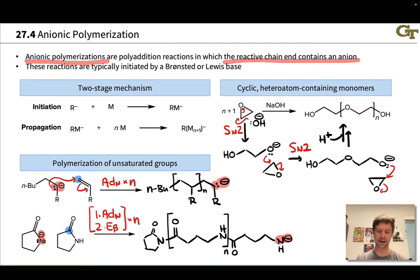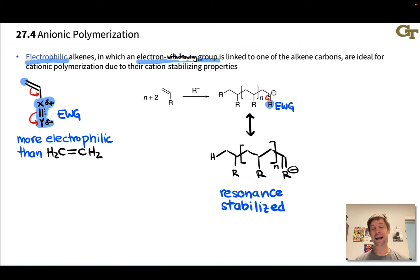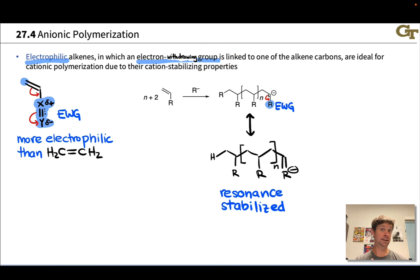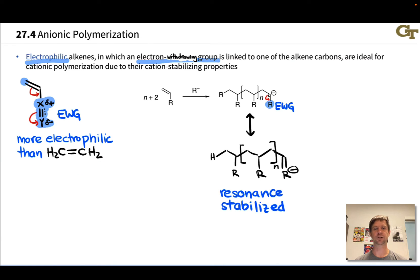The hallmark of anionic polymerization is an anion on the end of the chain. These are commonly living if that anion can hang around long enough to react with additional monomer added at a later point in time. Electrophilic alkenes are actually ideal for anionic polymerization, and the reasons for this are essentially the reverse of why nucleophilic alkenes are best for cationic polymerizations. Electrophilic alkenes contain an electron-withdrawing group linked to the C-C double bond. In a prototypical structure, we have a double or triple bond where Y is more electronegative than X, making Y partially negative and X partially positive, and resonance forms show that a particular carbon picks up positive charge — making it especially electrophilic.